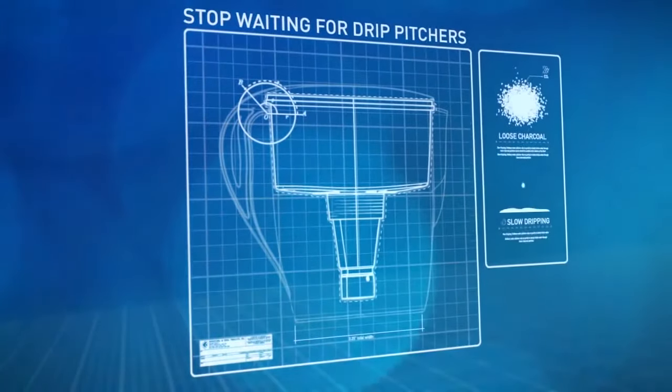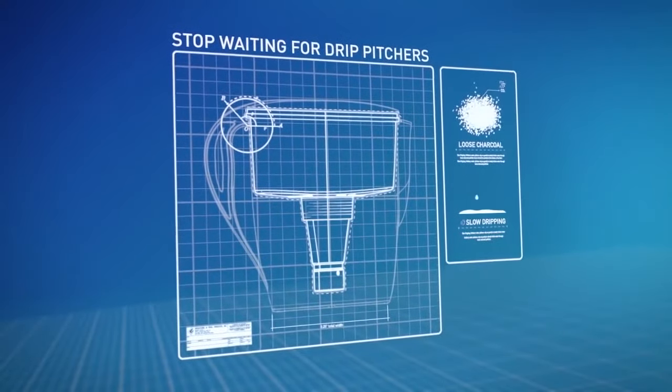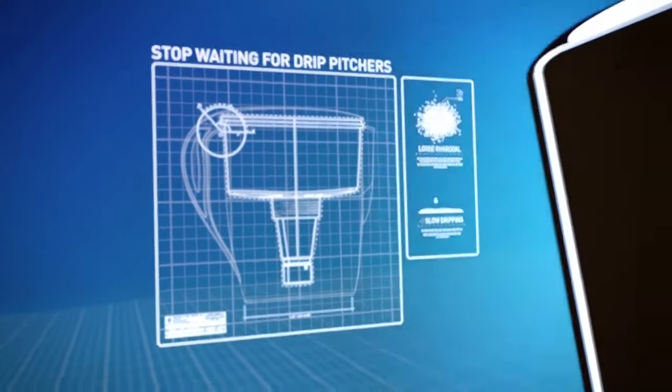Ordinary water pitchers use gravity to slowly trickle water through loose charcoal particles, and they still only filter out a small number of possible contaminants.